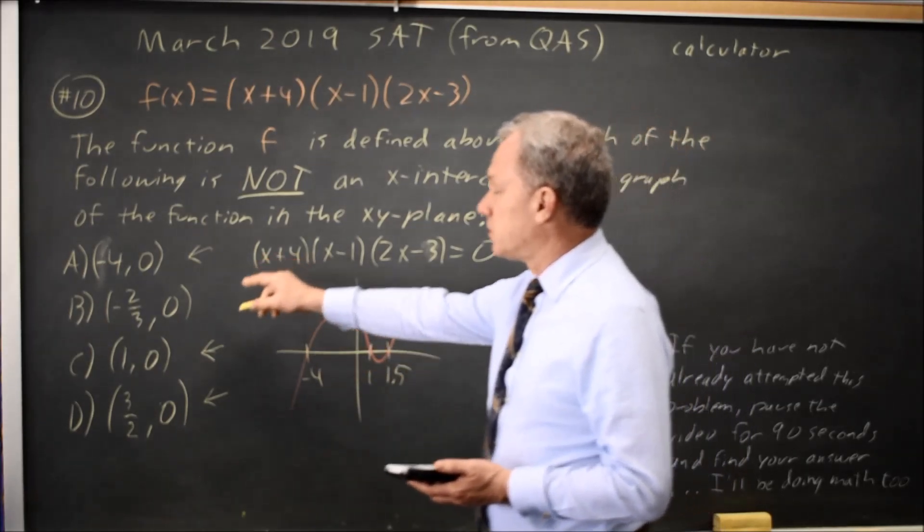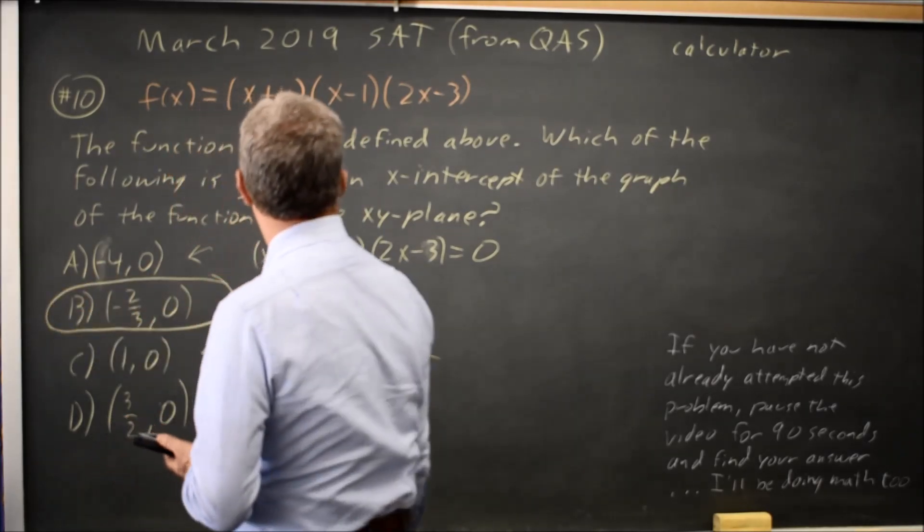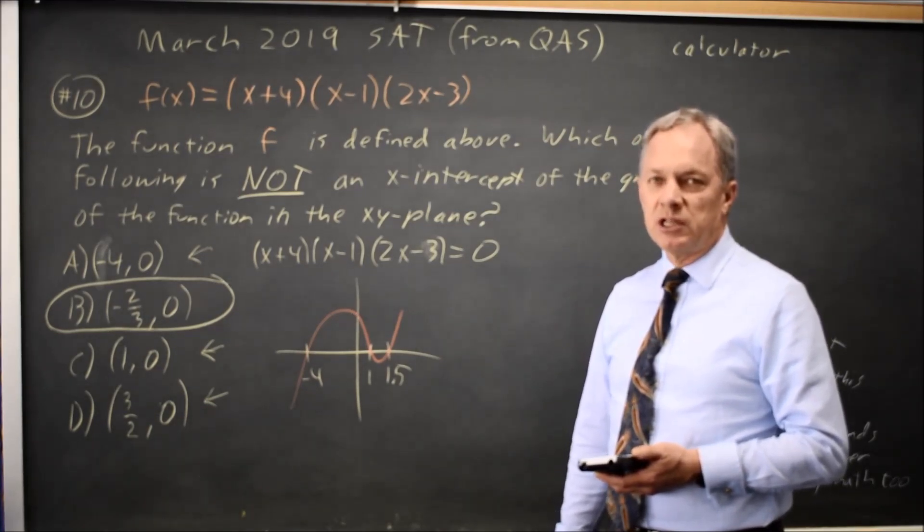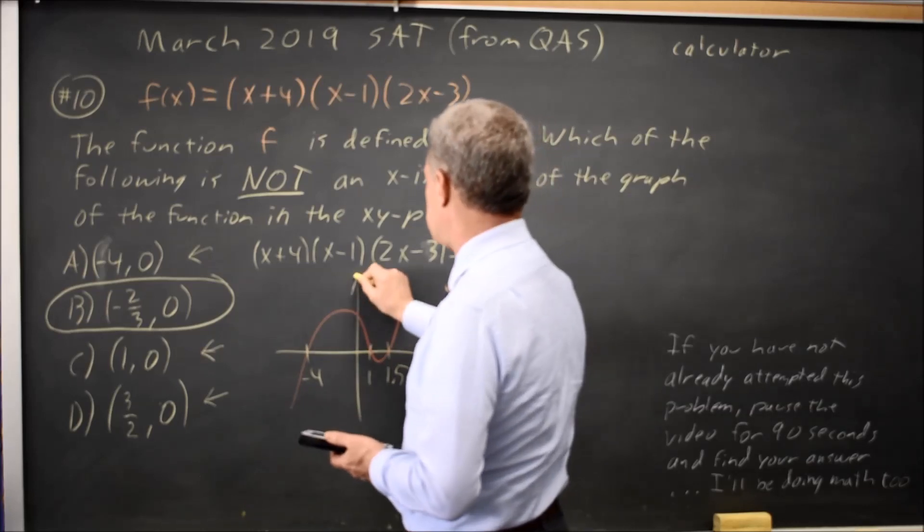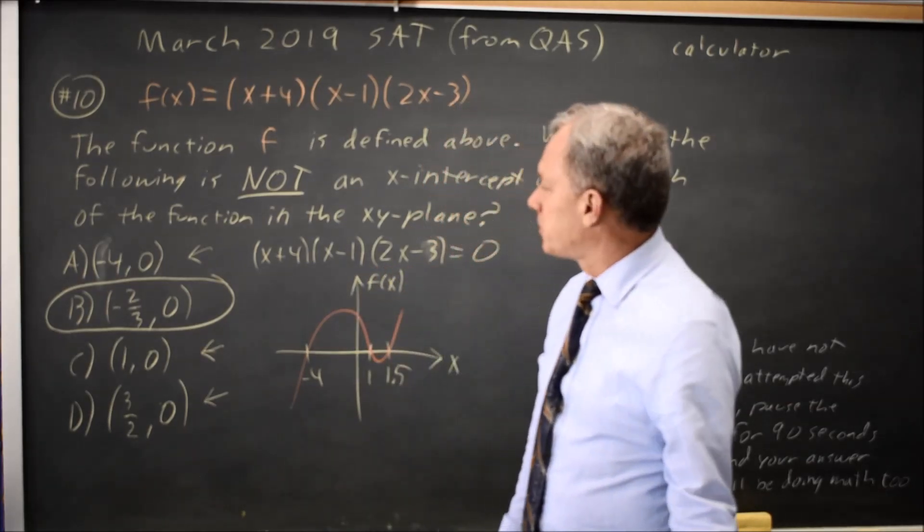These three are all zeros. This one is not a zero. And their question is, which is not an x-intercept, which is a point where the graph intersects the x-axis. So the one that is not an intercept would be choice B.